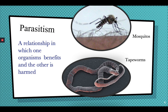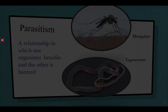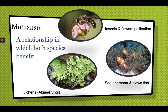Parasitism is a relationship in which one organism benefits but the other is actually harmed. An example is the mosquito and human relationship — the mosquito gets food, but humans are harmed. We call this parasitism.